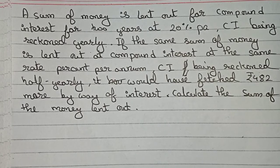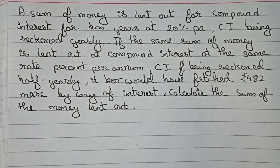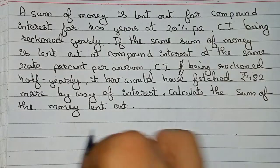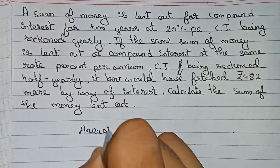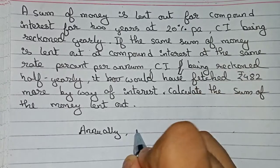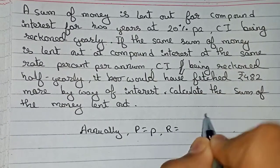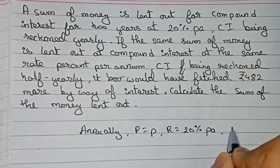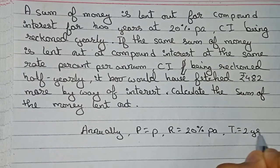In this question, the compound interest for the semi-annual portion will be ₹482 more than the annual portion. First, let's find out the compound interest annually. Write down all the information: principal is unknown, so write P; rate of interest is 20% per annum; and time is 2 years.